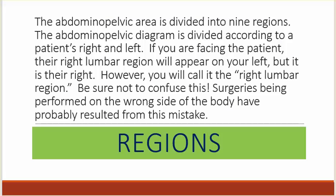The abdominal pelvic area is divided into nine regions. The abdominal pelvic diagram is divided according to a patient's right and left. If you are facing the patient, their right lumbar region will appear on your left, but it is their right — you will still call it the right lumbar region. Be sure not to confuse this, as surgeries performed on the wrong side of the body have probably resulted from this mistake.